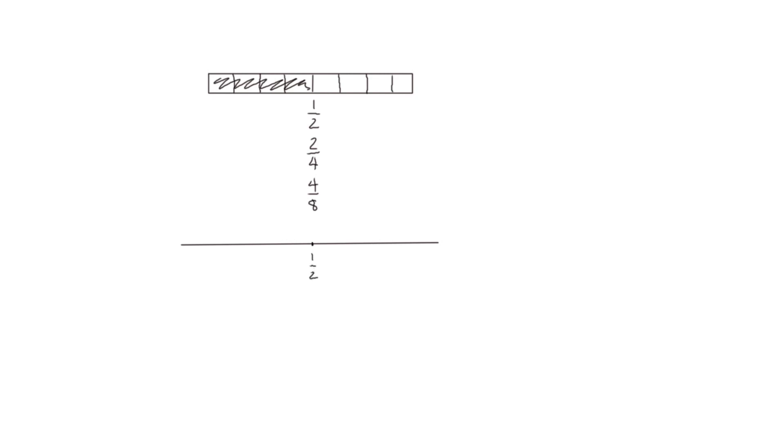Now we're going to draw a number line under the tape diagram that's going to coincide with the tape diagram. We're going to mark this point here as one half. The end of our tape diagram would be the beginning of our number line at zero, and the end of our tape diagram we'll mark here as a whole one. So on a number line we've shown one half.